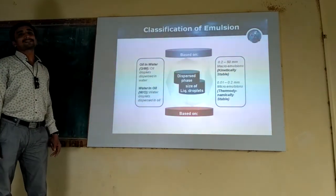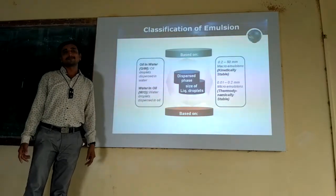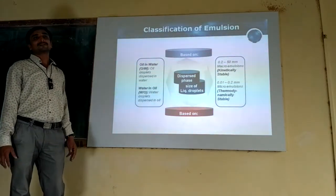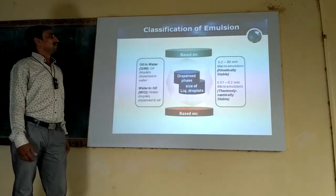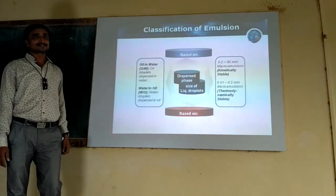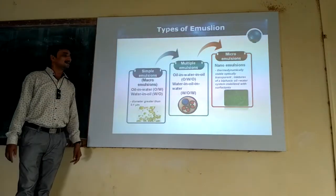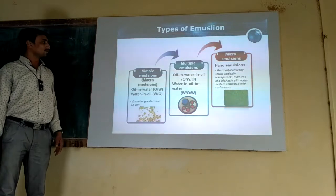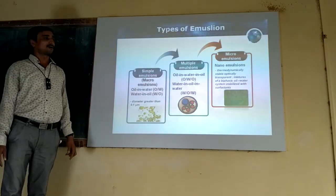Regarding classification of emulsions: emulsions are classified into two main types — O/W (oil-in-water) and W/O (water-in-oil), called simple emulsions. Depending on globule size, emulsions are categorized as macro emulsions (globule size 0.2 to 50 micrometers) and micro emulsions (globule size 0.01 to 0.2 micrometers). Simple emulsions, also called macro emulsions, have larger globule diameters of around 0.1 micrometers and are W/O or O/W type.